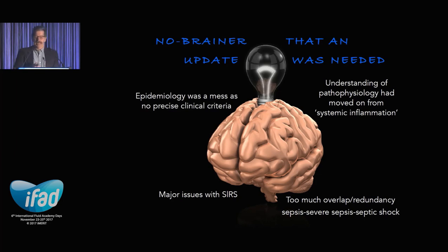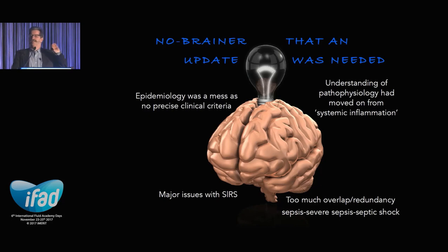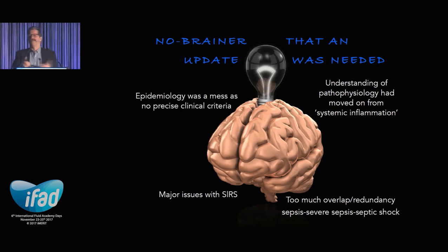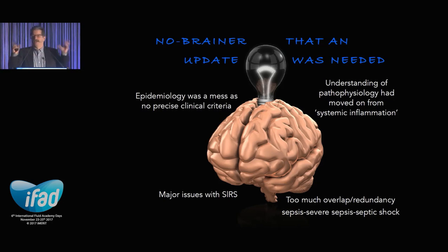Let's start. Basically, what Sepsis 3 brought — that's the topic I was asked to address. I think it's fair to say, and I talked about this yesterday, that it was a no-brainer that we had to change, because the previous definitions had come out in 2003 and the epidemiology was a complete mess as we didn't have precise clinical criteria. We'd moved on in our understanding of the pathophysiology — it wasn't just systemic inflammation. There were major issues with using SIRS, and there was a lot of overlap and redundancy around when infection ended and sepsis began. We needed clarity.